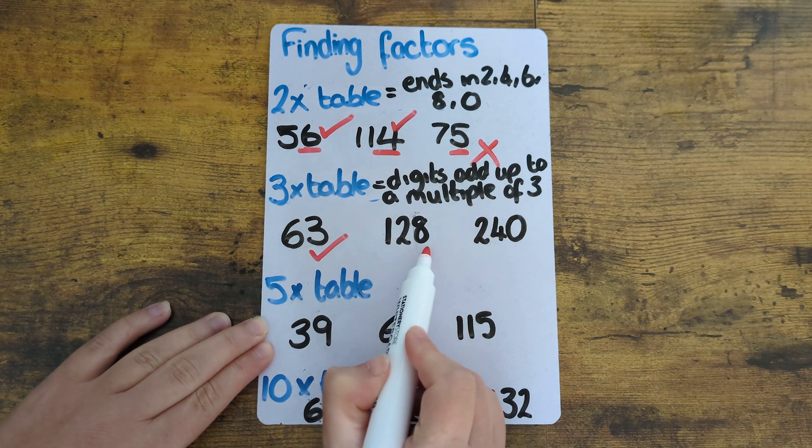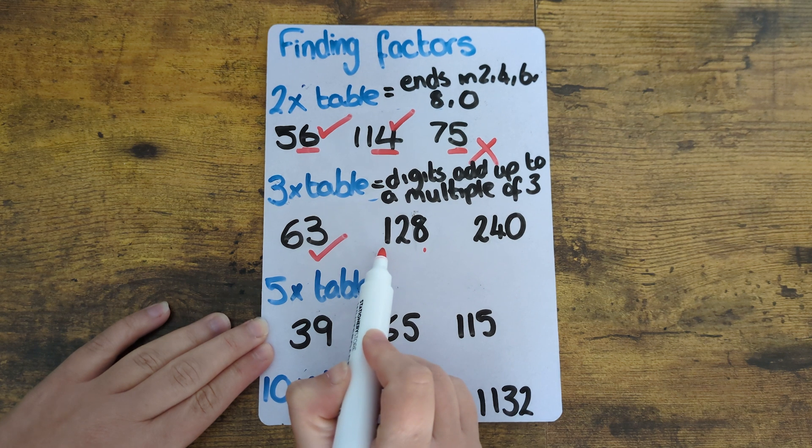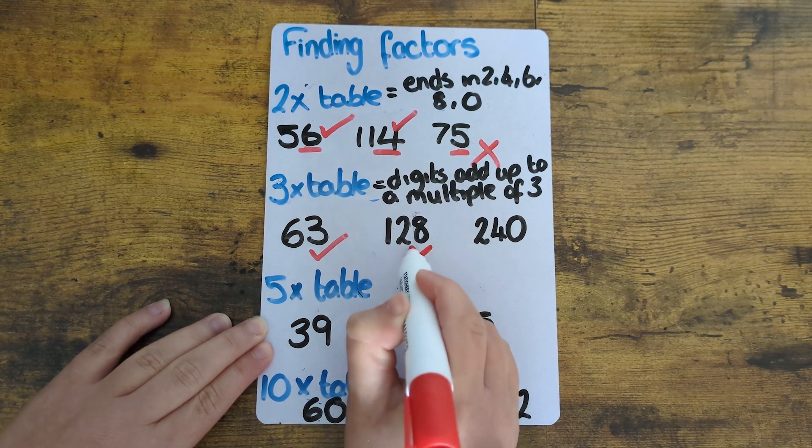128. Eight plus two is ten plus one is eleven. Eleven is not in the three times table so therefore 128 won't be either.